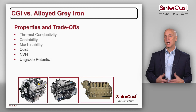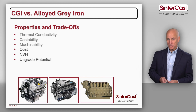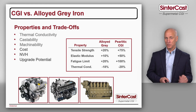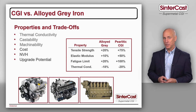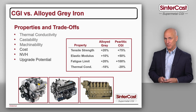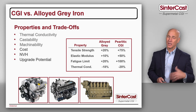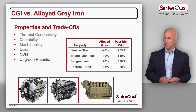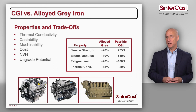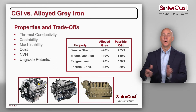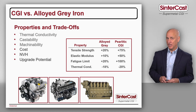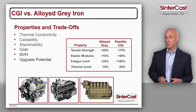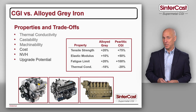To summarize: when moving from conventional grey cast iron to alloyed grey cast iron, we have a 20% increase in tensile strength, a 10% increase in stiffness, and only a 20% increase in fatigue strength. But if we change from grey iron to CGI, we have at least 75% increase in tensile strength, 50% increase in stiffness, and more than double the fatigue strength.